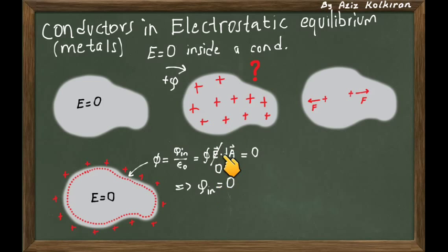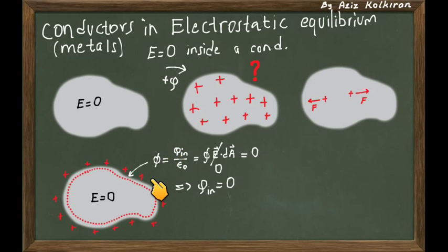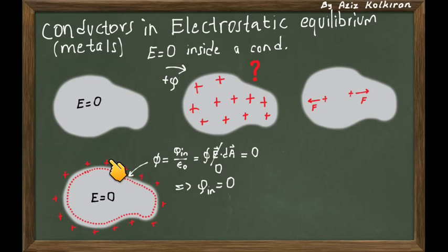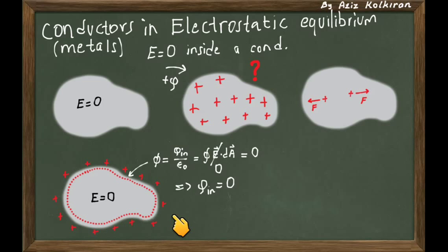This is true always, whether the conductor is neutral or charged. So if you have extra charge, that means the charges must go right to the outer surface of the conductor.